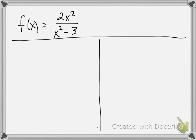Let's talk about the difference between y-axis symmetry and origin symmetry. We have f(x) equals 2x squared over x squared minus 3.